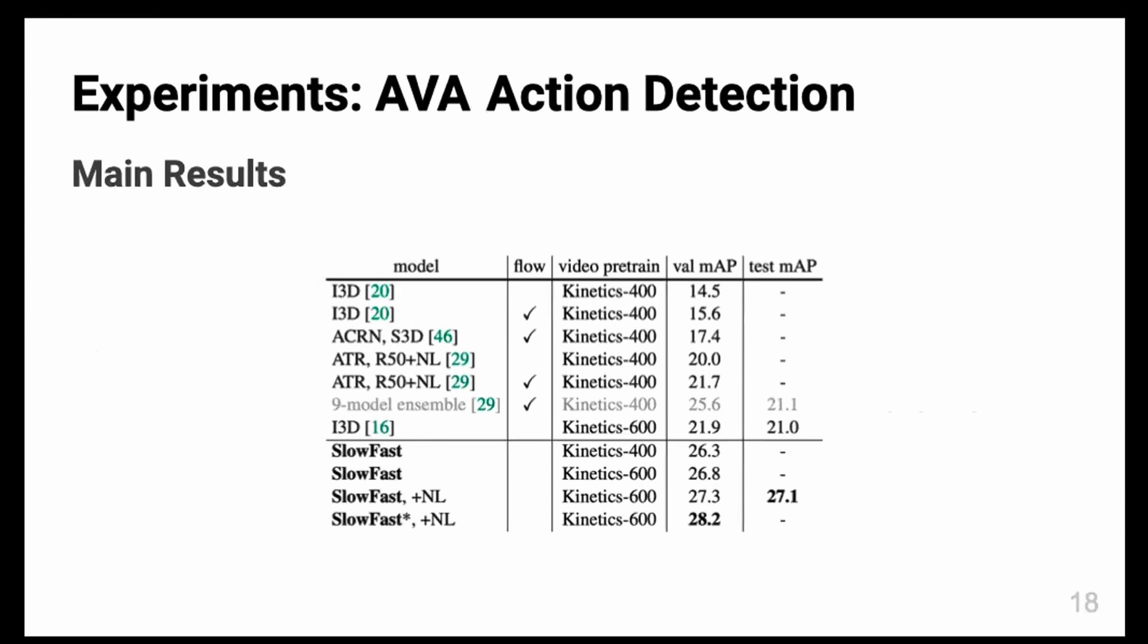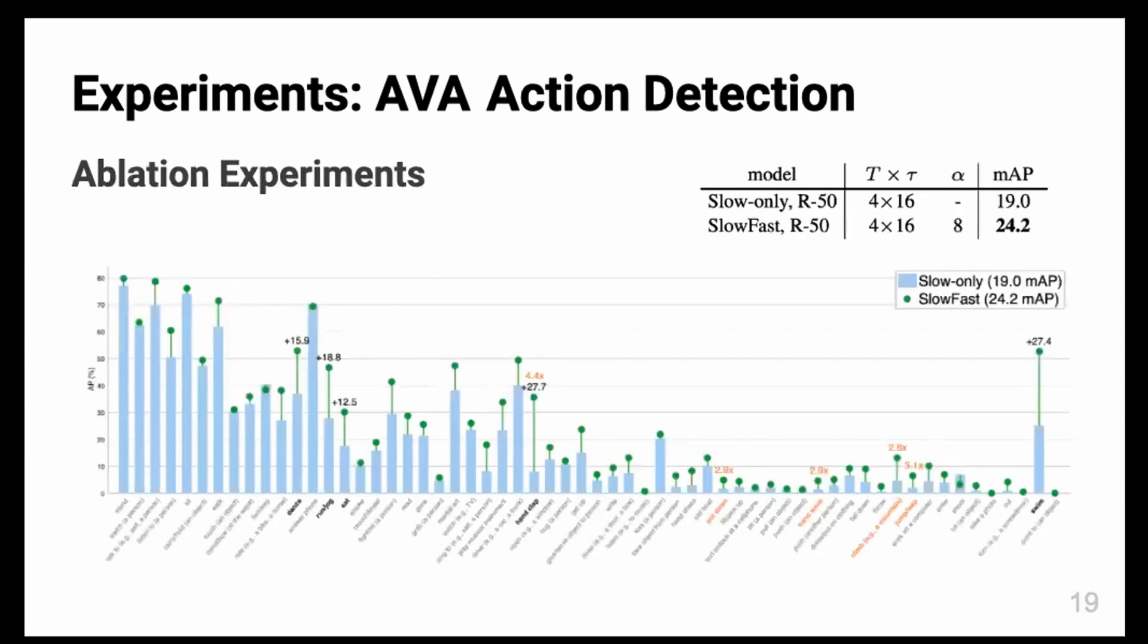This is the main results. They achieved quite impressive results compared to the previous state-of-the-art models. The SlowFast star model is where they adjust the IoU threshold for the person detection, and they achieve, they increase the performance a little more.